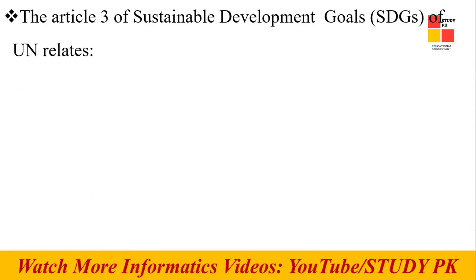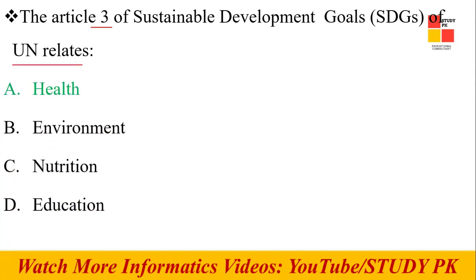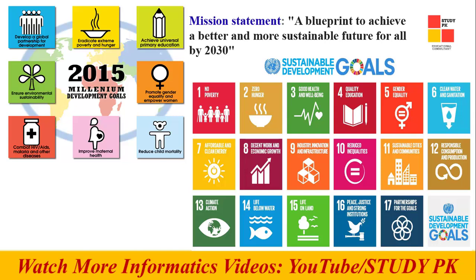First question: Article 3 of the Sustainable Development Goals of the UN relates to which of the following? The right answer is Health. Basically, the Sustainable Development Goals were adopted in 2015 by the UN to achieve a better and sustainable future. There are 17 goals total. Number one is No Poverty, second is Zero Hunger, and third is Good Health and Well-being.